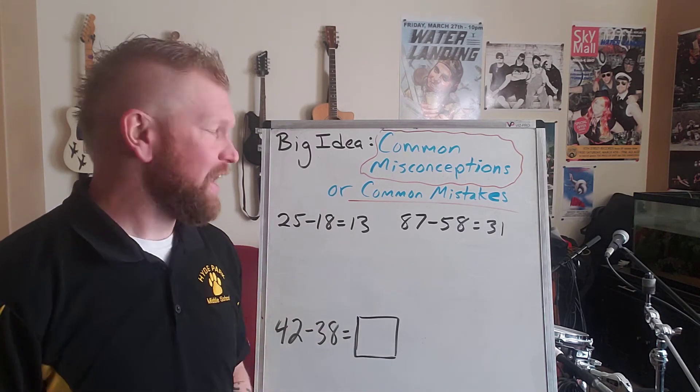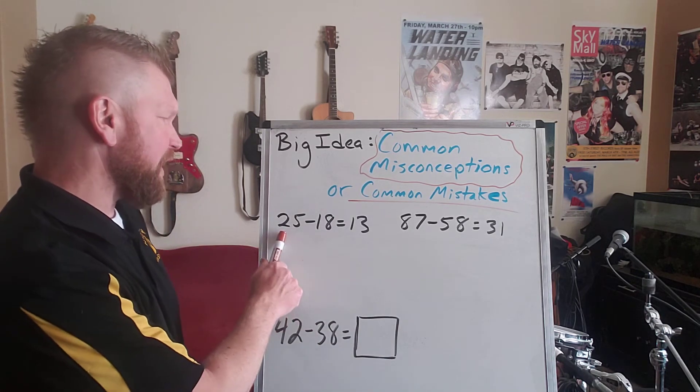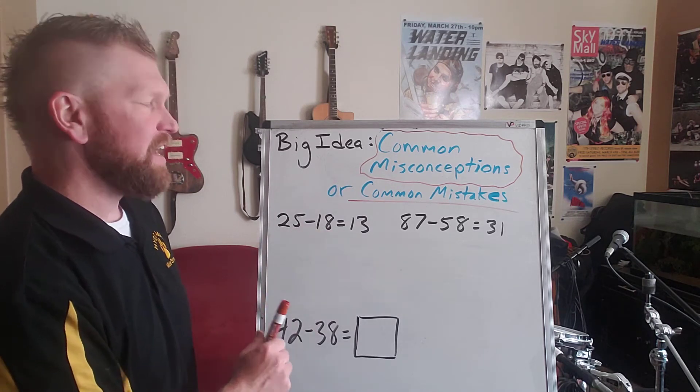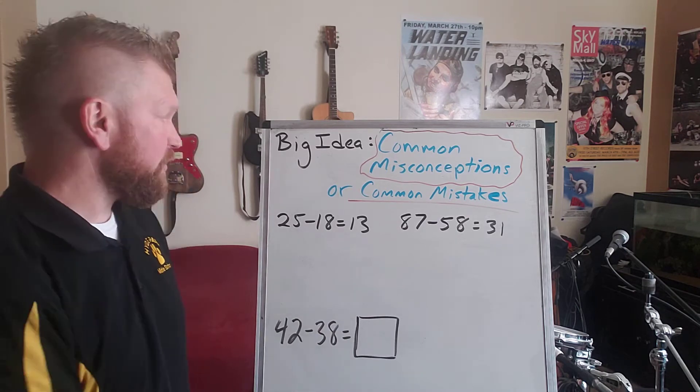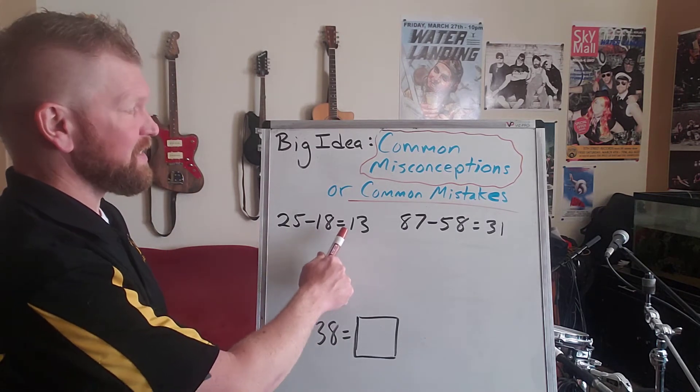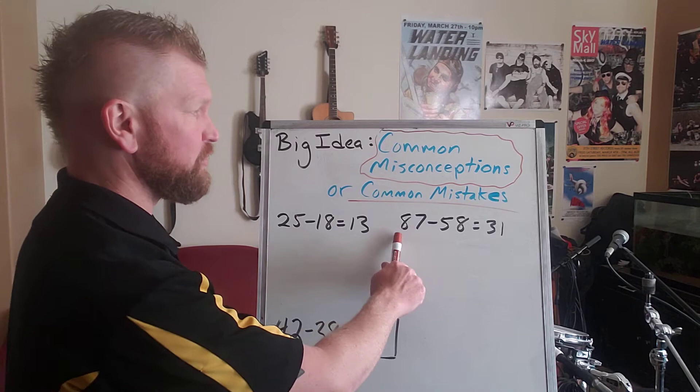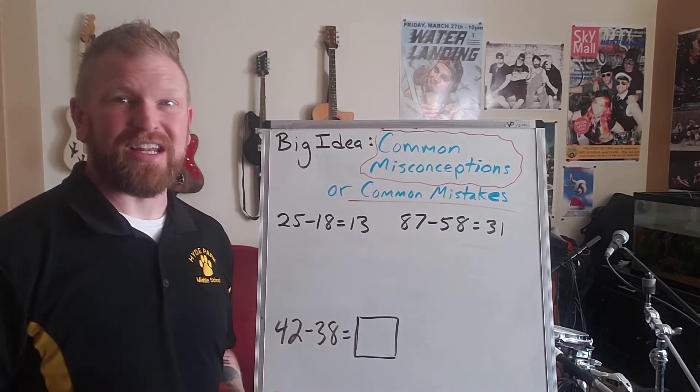So here's an example of that. If a student says 25 minus 18 and gets 13, and then they try 87 minus 58 and they get 31, well, certainly if you solve this problem, you'll see that it's not 13. And if you solve this problem, you will see that it's not 31.